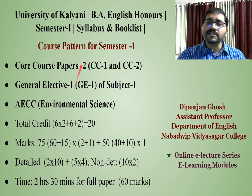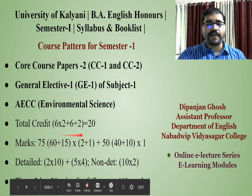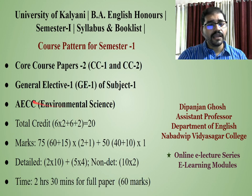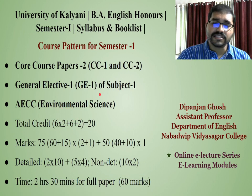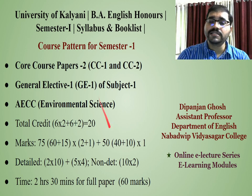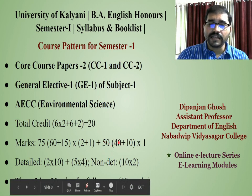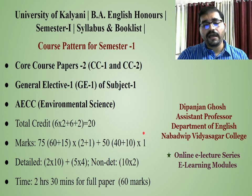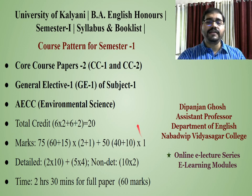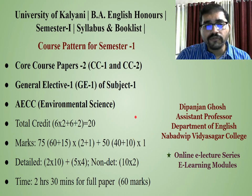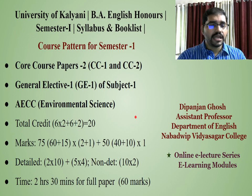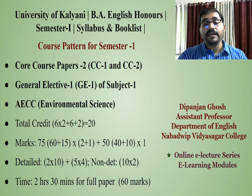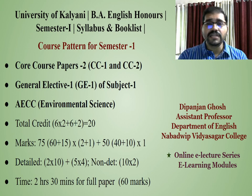So you have two core and one GE paper — three papers — and 3 into 75 gives the total marks for those. Now for the environmental science section, that is the AECC paper, it comprises 50 marks: 40 marks for the final examination and 10 marks for internal, again divided as 5 for attendance and 5 for the internal exam conducted by the college authority. Focusing on English Honours, each syllabus of each paper is divided into detailed text and non-detailed text sections.